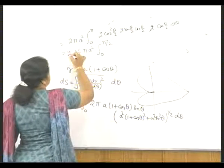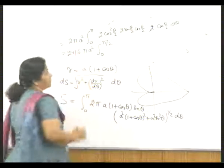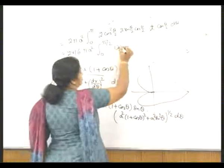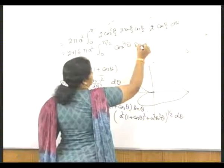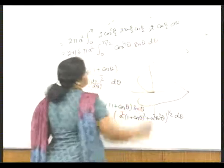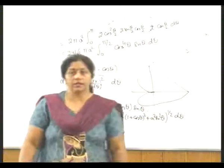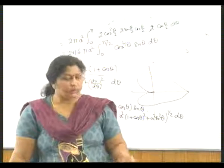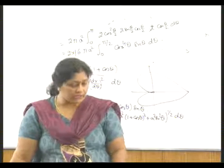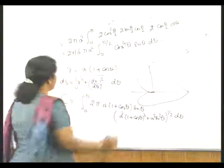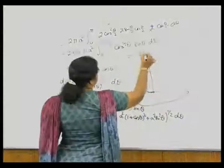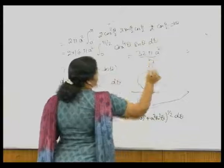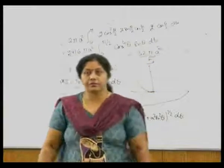Integrating 2π/2 times cos⁴(θ/2) times sin(θ) dθ directly gives cos⁵ or 1/5 directly, and it comes out to be 32πa²/5. So this is the value of the surface area.